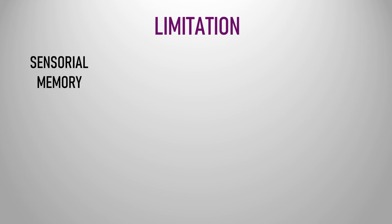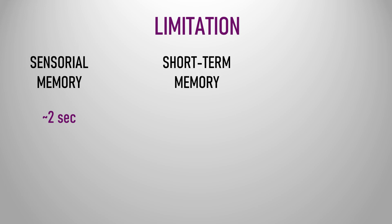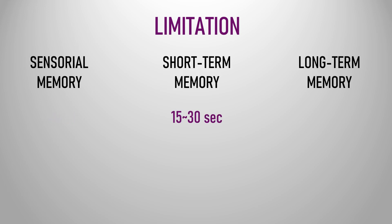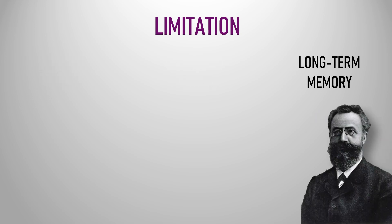Another important point to keep in mind is how our memory works. Three types of memory can be defined: sensory memory, that lasts between one and two seconds; short-term memory, that lasts a little bit longer; and long-term memory, which is characterized by the volume of information it can retain.